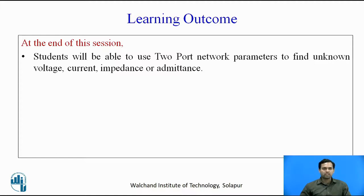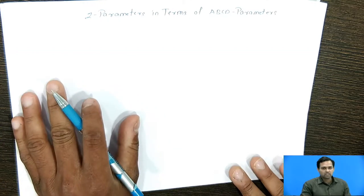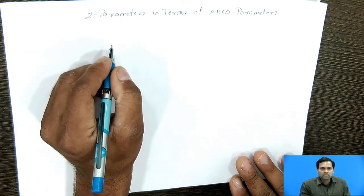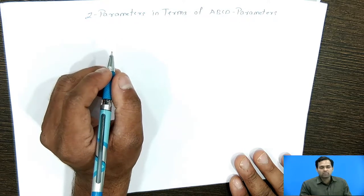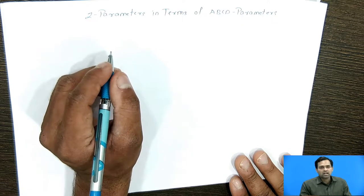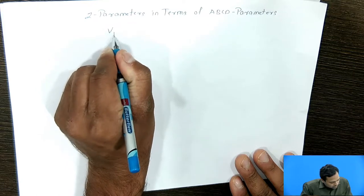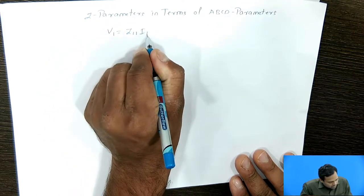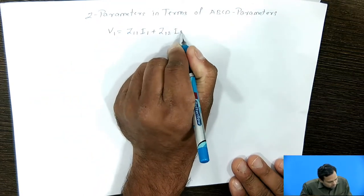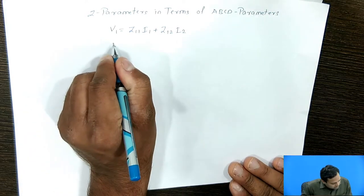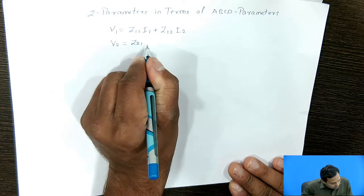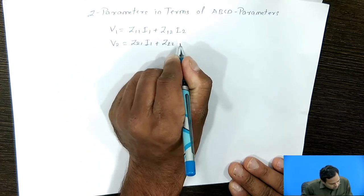Now we will write equations related to Z parameters as well as ABCD parameters. First, we will write equations related to Z parameters. In the case of Z parameters, dependent variables are V1 and V2, and independent variables are I1 and I2. The equations are: V1 = Z11·I1 + Z12·I2 (equation 1), and V2 = Z21·I1 + Z22·I2 (equation 2).